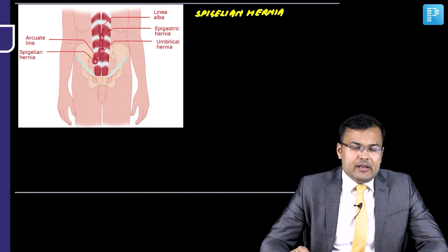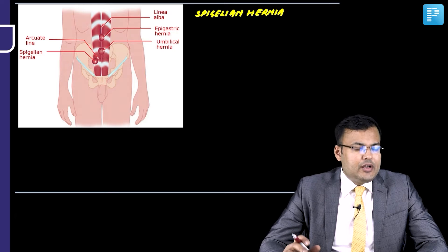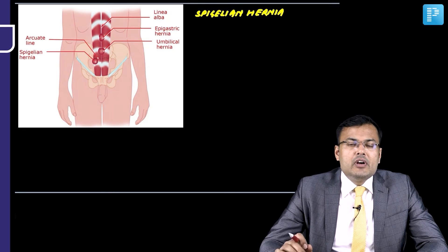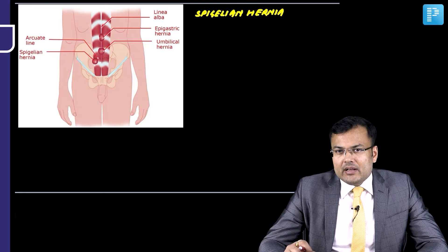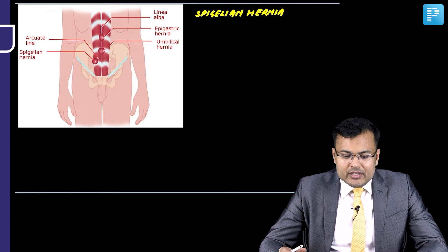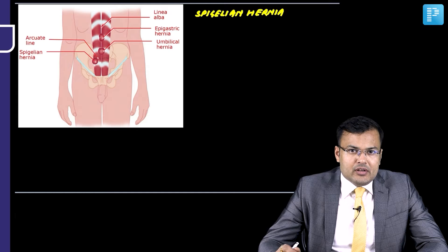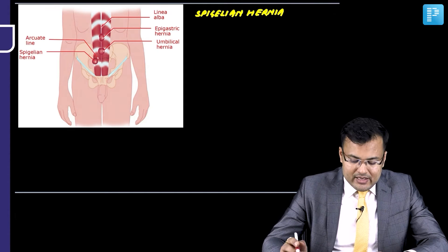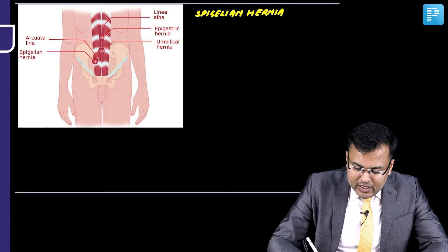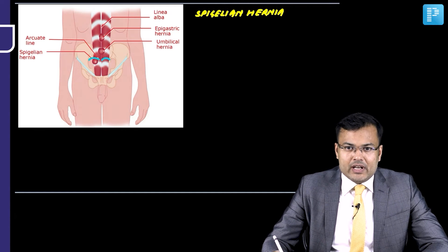What happens in spigelian hernia? Here, there is hernia occurring through the spigelian fascia. If you see the location of most of the hernias, most are located in the infra-umbilical region. Why? Because in the infra-umbilical region, there is absence of the posterior rectus sheath. So the spigelian hernia is also located in the infra-umbilical region — you can see here, this is the arcuate line — so the location is at or just below the arcuate line.